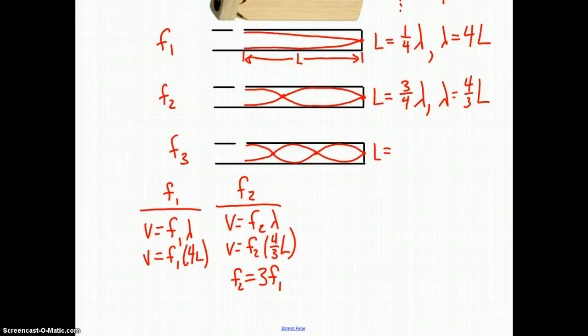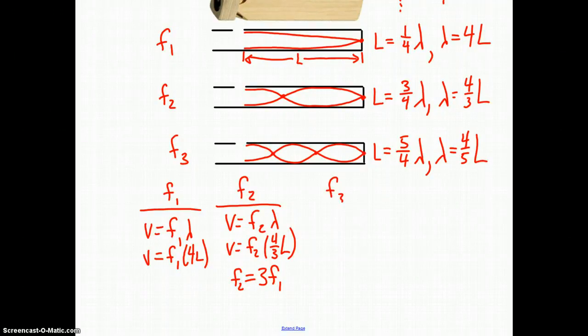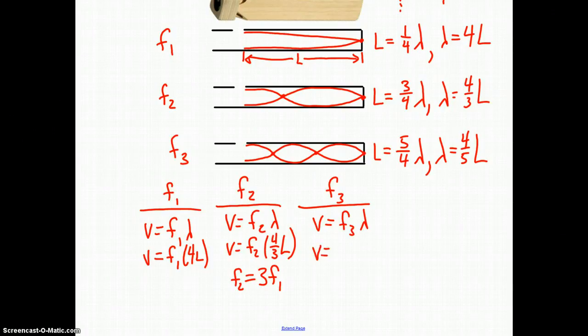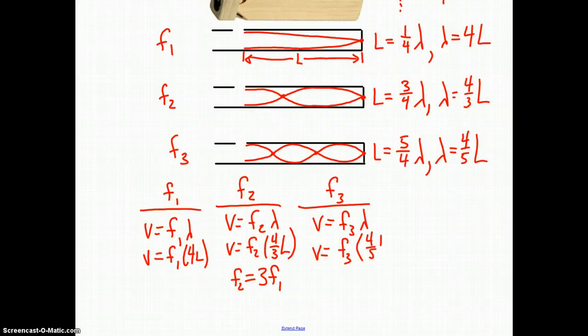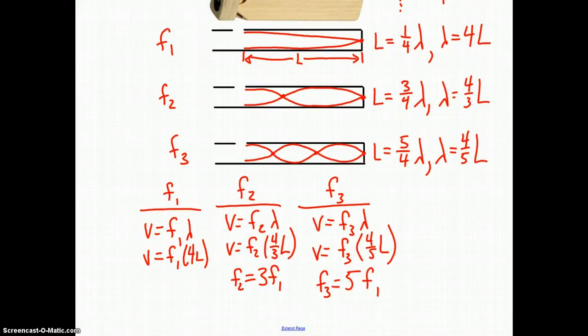How much of a standing wave is that? Well, that's a whole one plus another quarter written as a fraction. That would be 5 quarters lambda. And so the wavelength would be 4 fifths of the air column, whose length is L. Analyzing the data for the third harmonic, V equals F3 lambda, V equals F3 times 4 fifths L. Now, when we compare that to the fundamental frequency, we see that F3, in terms of the fundamental frequency, would be 5F1. So the second harmonic would be 3 times the fundamental frequency, and the third harmonic would be 5 times the fundamental frequency.